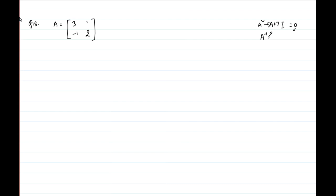To get A squared we multiply A by itself. A squared equals [3, 1; -1, 2] times [3, 1; -1, 2], which gives [8, 5; -5, 3].